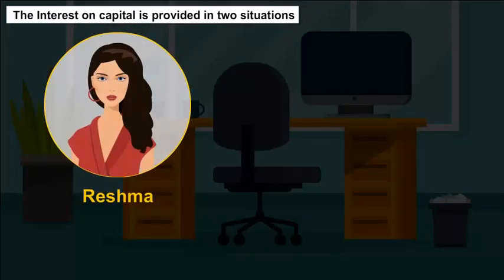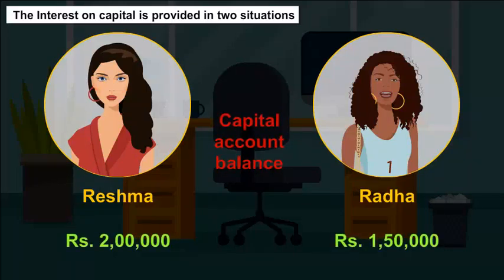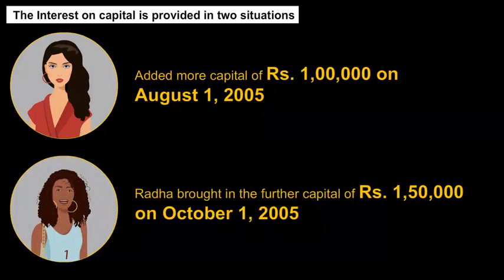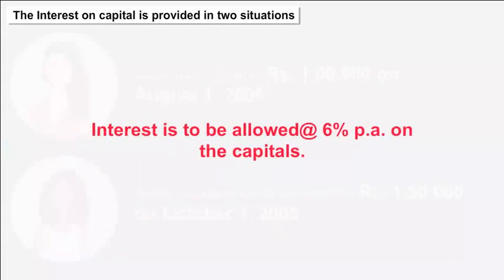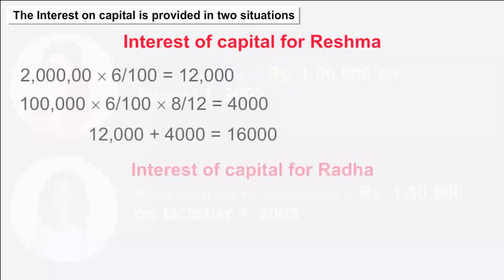Another example: Reshma and Radha are partners in a firm with capital account balances of Rs. 2 lakh and Rs. 1 lakh 50,000 respectively on April 1, 2005. Reshma added more capital of Rs. 1 lakh on August 1, 2005, and Radha brought in further capital of Rs. 1 lakh 50,000 on October 1, 2005. Interest is to be allowed at 6% per annum on the capitals, and the interest on capital will be calculated accordingly.